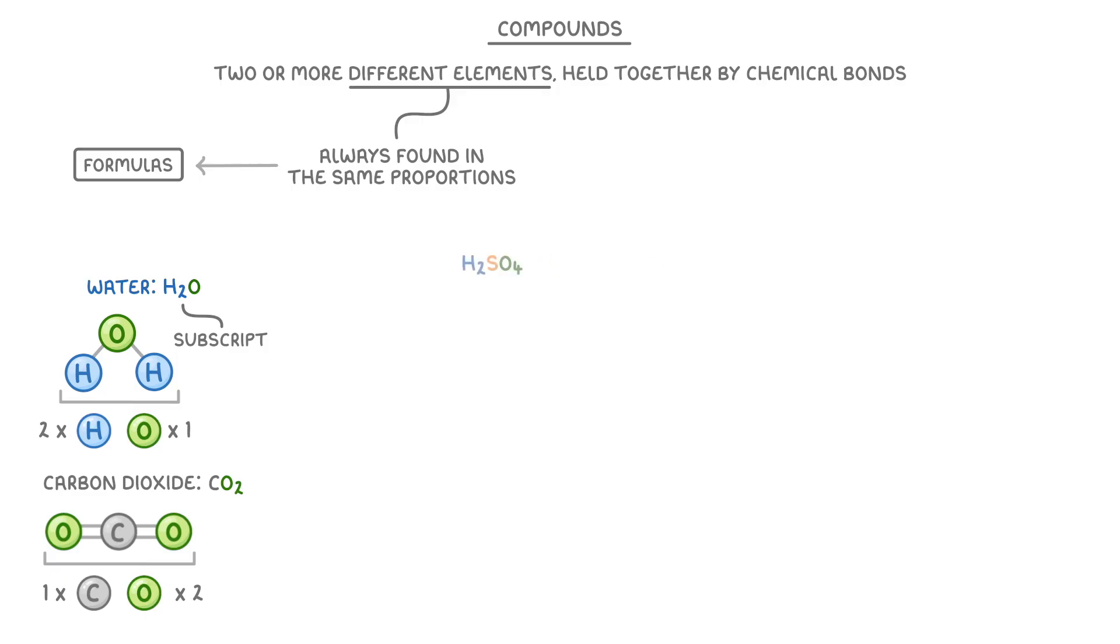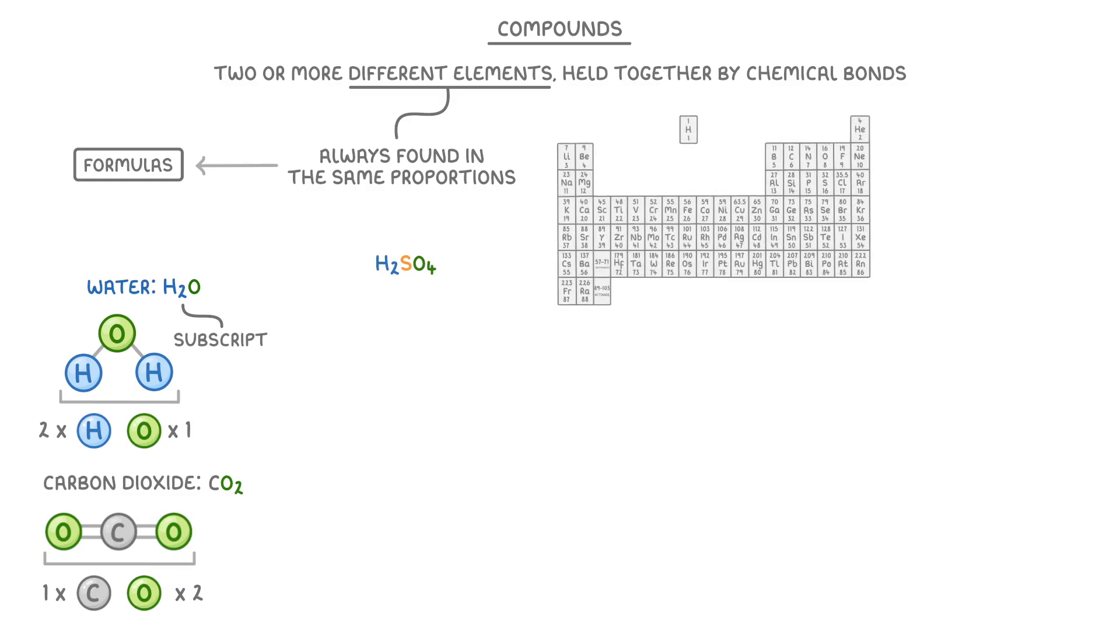A more complicated example is H2SO4. And if you're not sure what any of the symbols mean, remember you can just look them up on the periodic table, because it will also have their full name. If we read it letter by letter, we can see that each molecule of sulfuric acid contains two hydrogen atoms, one sulfur, and four oxygens.